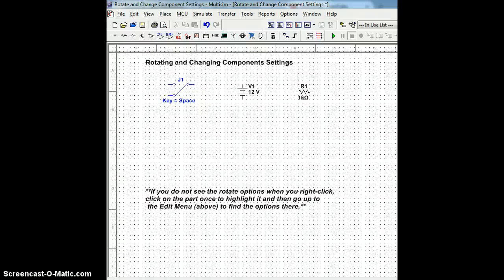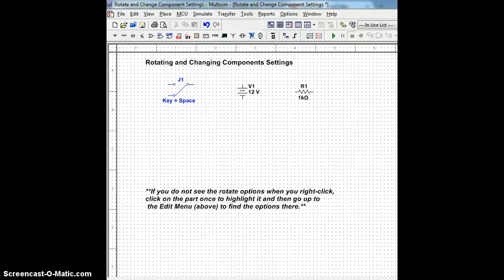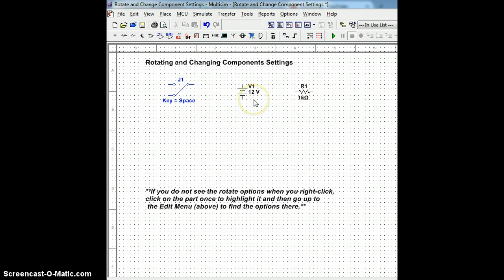This video is intended to be an instructional source for Multisim 12 rotating and changing component settings. Shown above are three of the more commonly used parts in Multisim in our DE class. The first of which is the SPDT switch, the DC power source, also known as a battery, and then the resistor.